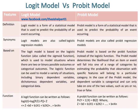The Logit Model is based on the Logistic Function, also called the Sigmoid Function, which is used to model situations where there are two or binary possible outcomes or categorical outcomes. The Logistic Function can be used to model a variety of situations, including binary-dependent variables, dichotomous-dependent variables, and categorical data.